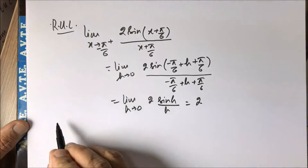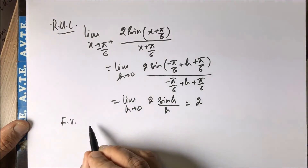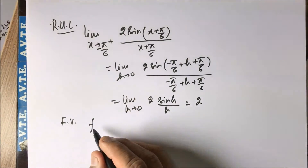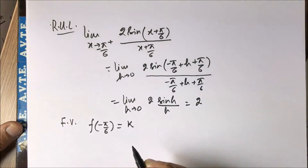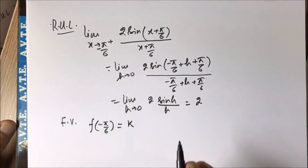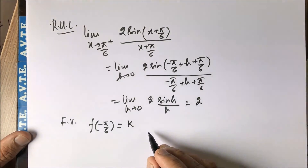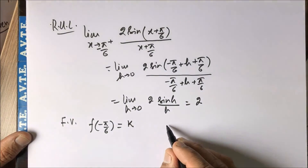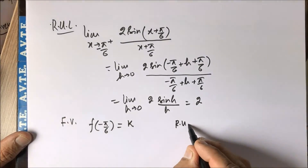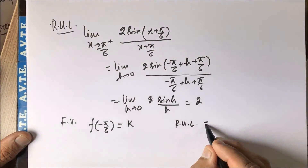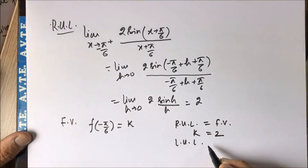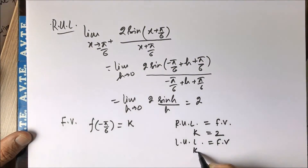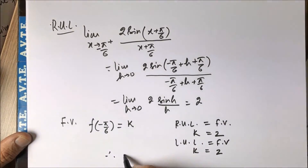Both the left-hand limit and right-hand limit are equal, and we put them equal to the functional value. The functional value at x equal to minus pi by 6 is k. From the first, second, and third parts, putting right-hand limit equal to functional value gives k equal to 2, and putting left-hand limit equal to functional value also gives k equal to 2. Therefore, the value of k is 2.